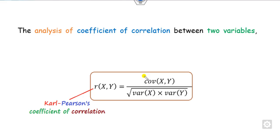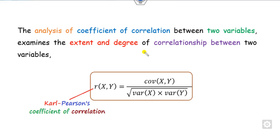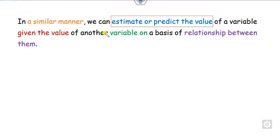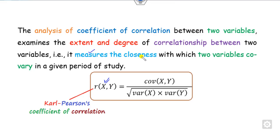So far we have discussed the Carl Pearson coefficient of correlation, which is defined by a specific equation. It measures only the degree of the correlationship between two variables — how close the two variables are over a given period of time. However, the correlation coefficient cannot estimate or predict the value of another variable.